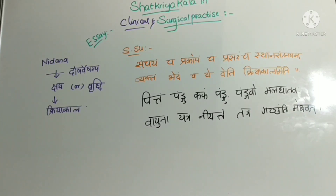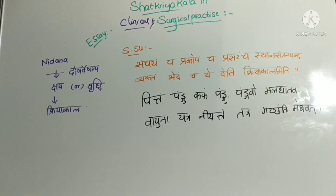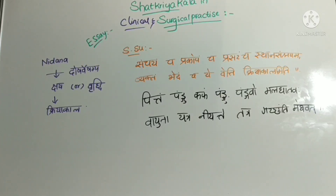The English translations of each stage: Sanchaya means mild accumulation; Prakopa means aggravation; Prasara means spreading; Sthana Samshriya means localization; Vyakta means complete symptoms will be seen; and finally Bheda means differentiation of the disease will be seen clearly. Most of the complications will be noticed in the person afflicted in the Bhedavastha. The doshas accumulate first in Sanchaya, then aggravate in Prakopa, then spread in Prasara, then localize in Sthana Samshriya, then manifest in Vyakta, and finally differentiate in Bheda.